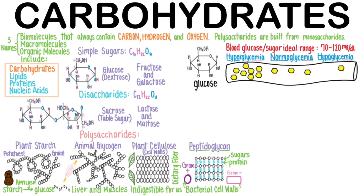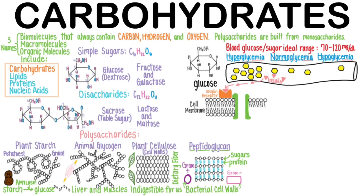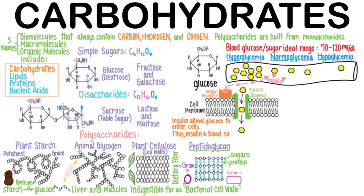Normoglycemia means normal amounts of sugar in the blood. In order for the polar glucose molecules to pass through the cell membranes and enter cells, the protein hormone called insulin binds to insulin receptors on cells. These receptors then stimulate glucose channels to be inserted into the cell membrane. The polar glucose molecules can then passively enter the cells through these glucose channels, moving down their concentration gradient. Insulin allows glucose to enter cells; thus, insulin decreases blood sugar.